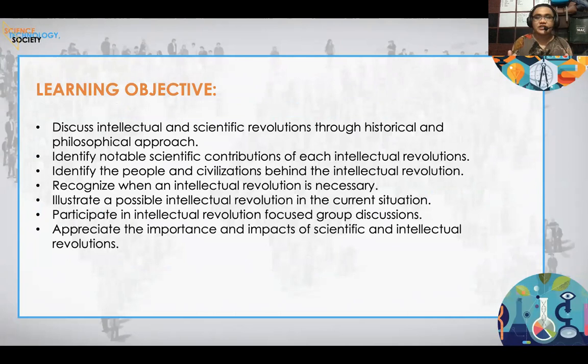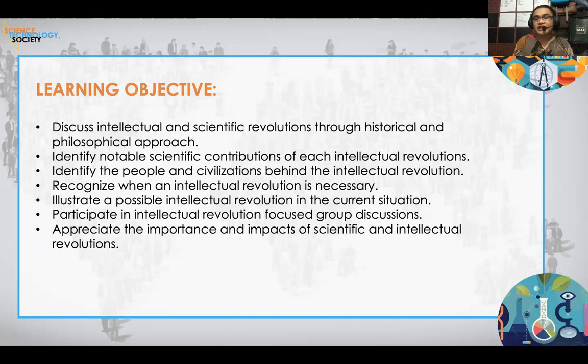The learning objectives of this chapter are: one, discuss intellectual and scientific revolutions through a historical and philosophical approach; two, identify notable scientific contributions of each intellectual revolution; three, identify the people and civilizations behind the intellectual revolution; four, recognize when an intellectual revolution is necessary; five, illustrate a possible intellectual revolution in the current situation; six, participate in focused group discussions; and seven, appreciate the importance and impact of scientific and intellectual revolutions.